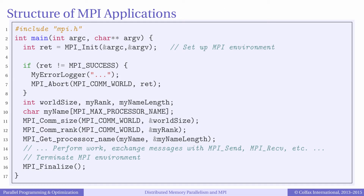We have already seen the general structure of MPI applications. The typical usage model is that multiple processes run the same application code. In this code the processes must find each other by calling MPI_Init. Each process can determine its role in the application by querying two numbers. The first number is the size of the MPI communication world, which is the total number of MPI processes in the current application. The second number is called the MPI rank, and this is a zero-based integer which is the index number of the process.